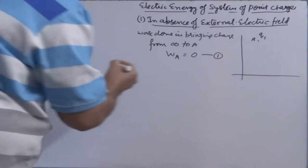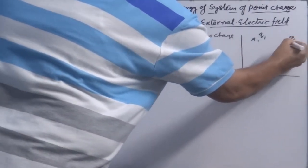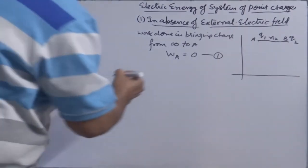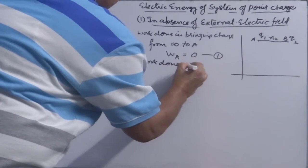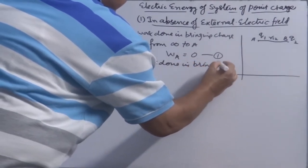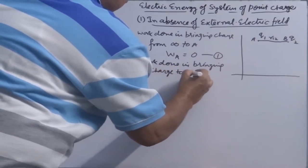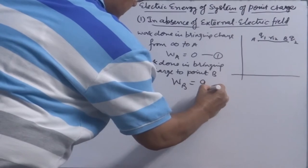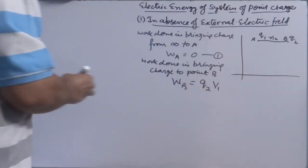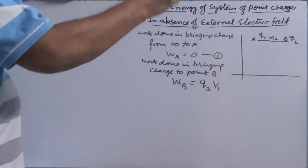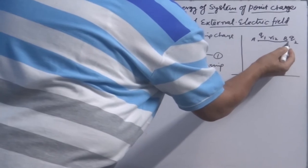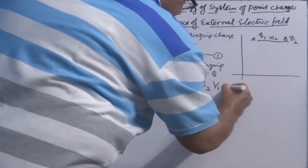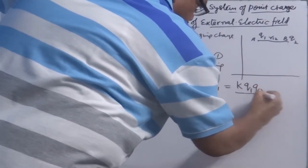Now, I brought another charge Q2 and settled down at point B. Distance between A and B is R12. The work done in bringing charge to point B, WB is equal to Q2 times potential due to first charge. Since Q1 is placed earlier, by that time you bring Q2 at this position B, it has already set up its own electric field and potential field. Potential due to a single point charge system is K Q1 Q2 over R12.